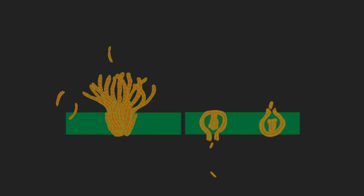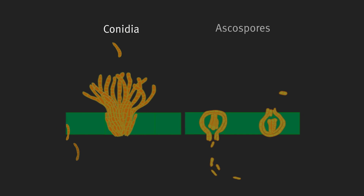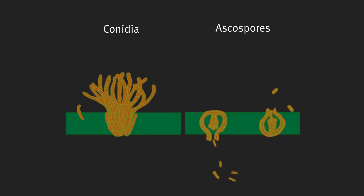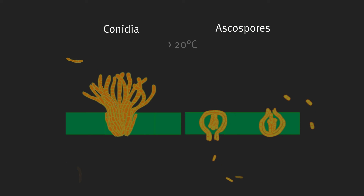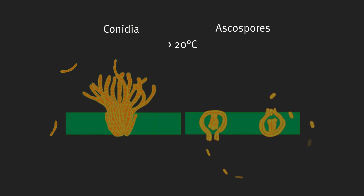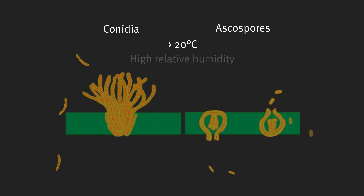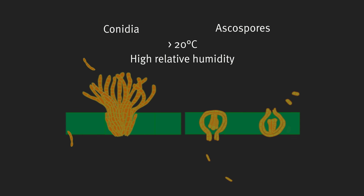The disease produces two types of spores, conidia and ascospores, which germinate on the leaf surface. Spore germination is dependent on environmental conditions and occurs with temperatures over 20 degrees and a high relative humidity of close to 100%.